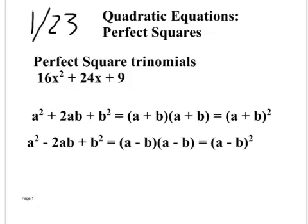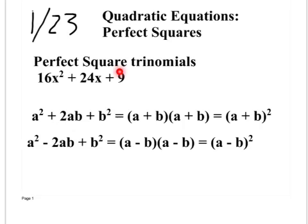Perfect square trinomials — for example, 16x² + 24x + 9. You know it's a perfect square trinomial when the first term is a perfect square, b is a perfect square, and the middle term equals the square root of the first term times 2 times the square root of the last term. So is 24 equal to 4 times 3 times 2? Yes it is.